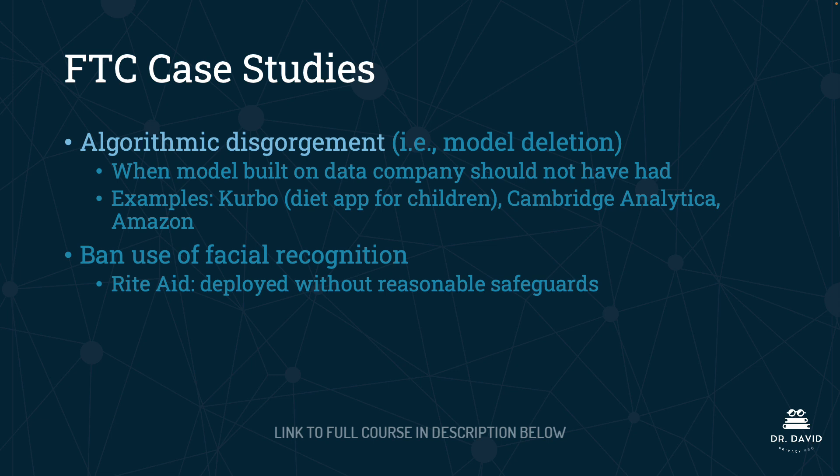One case of algorithmic disgorgement concerned Kurbo, which is an app or subsidiary of Weight Watchers. Kurbo was a diet app for children but did not follow laws and regulations concerning the collection of children's data, so the FTC required them to delete that model. Cambridge Analytica was also required to delete their model, and there has been at least one Amazon case where the same requirement was imposed.